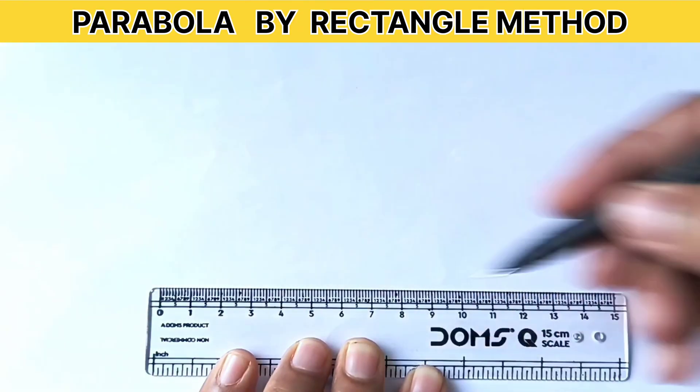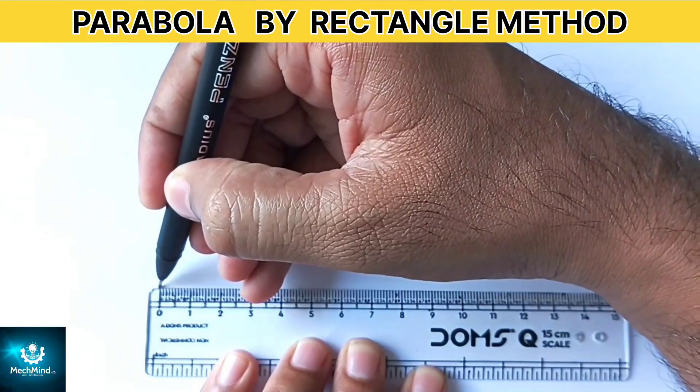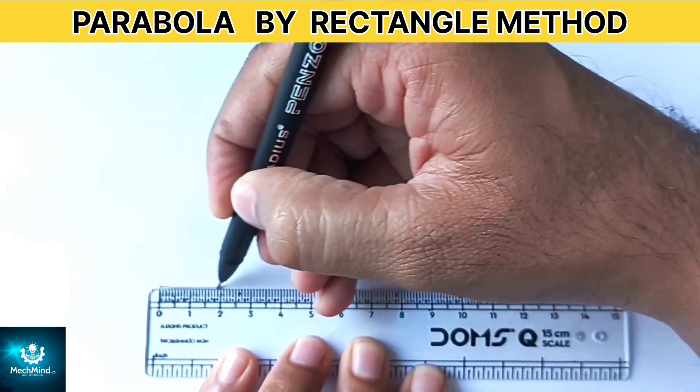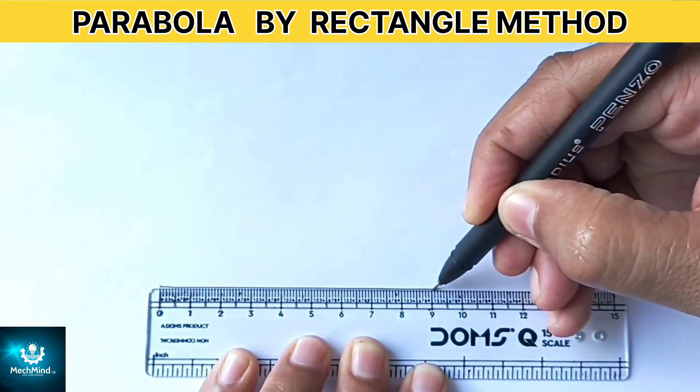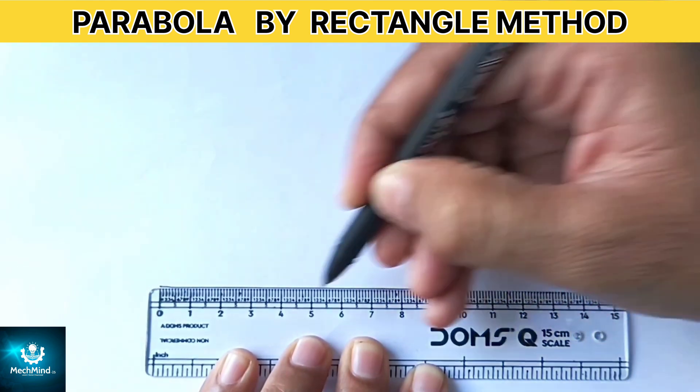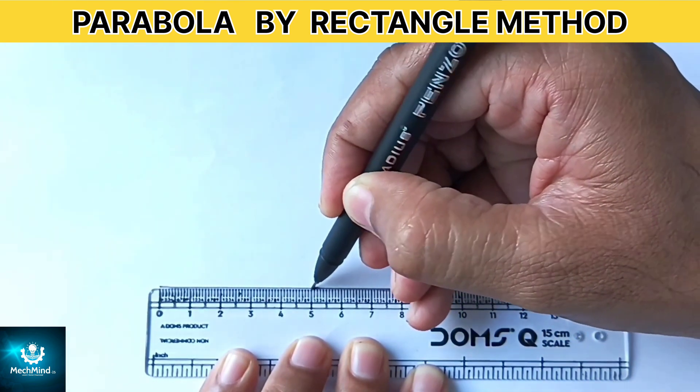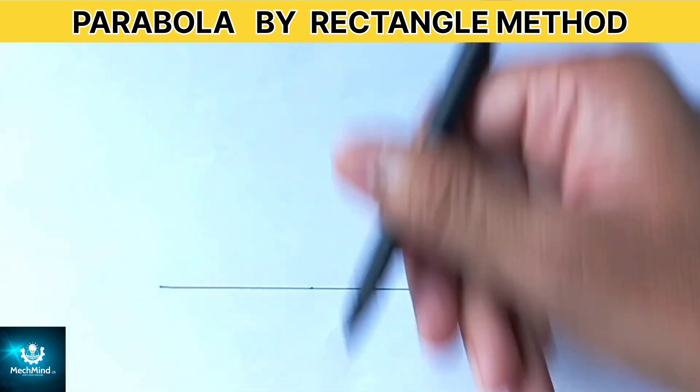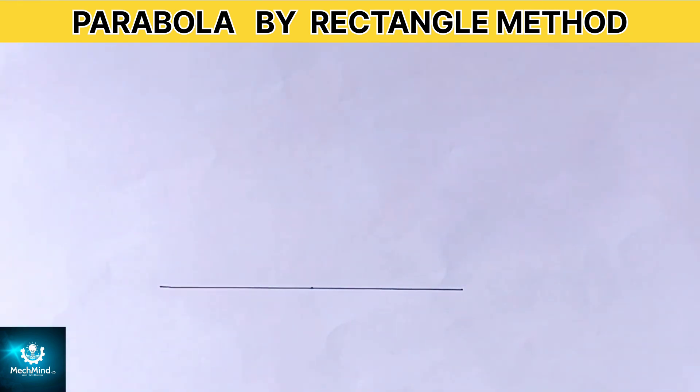First draw a horizontal line of 100 mm that is the base length for a parabola and mark its midpoint. Label the endpoints as A and B and midpoint as O.